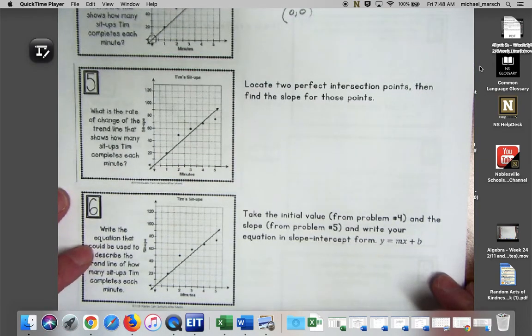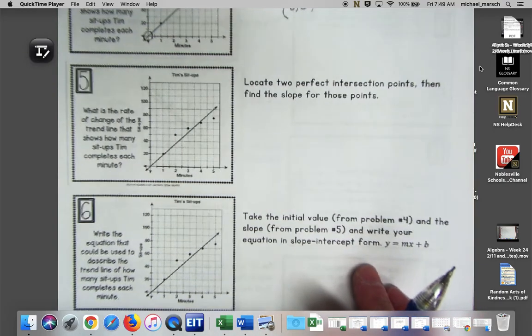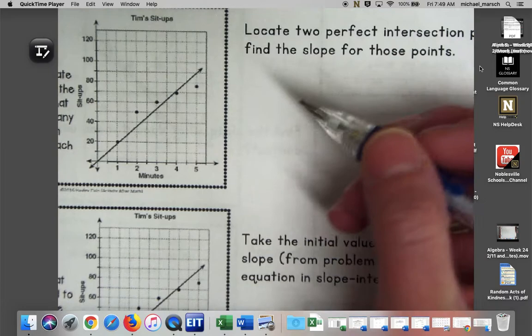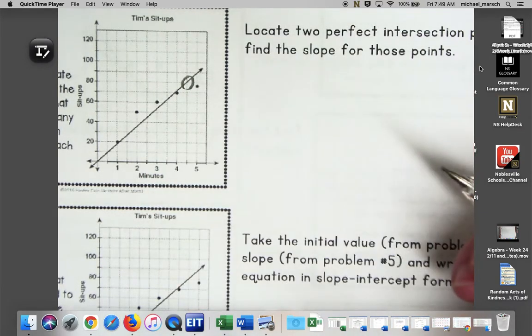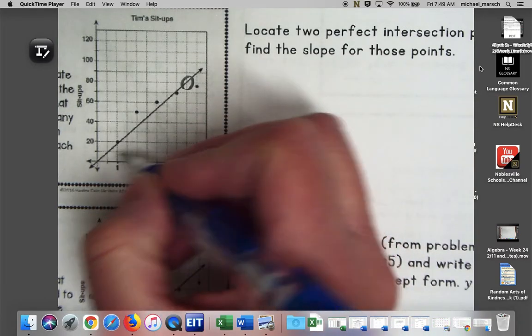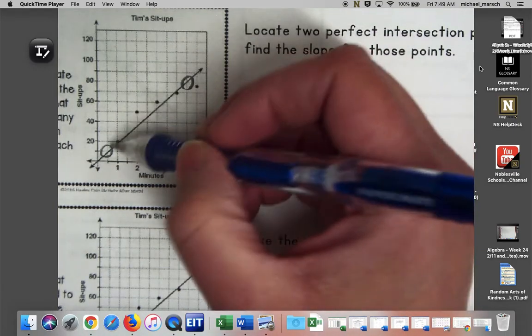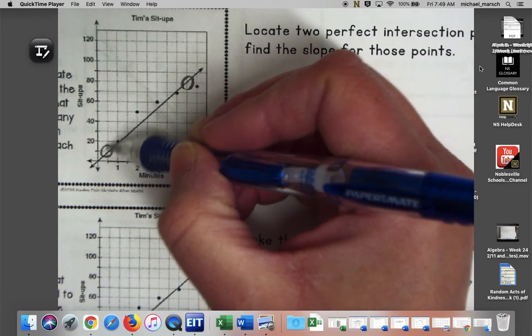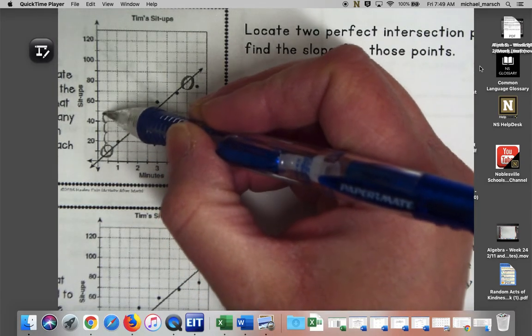Number five, what is the rate of change of the trend line that shows how many sit-ups Tim completes each minute? I'm going to zoom in a little bit. I found two perfect intersection points. I'm going to use this one that looks like a perfect intersection point and maybe this one right here.